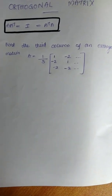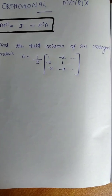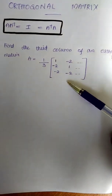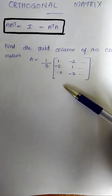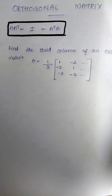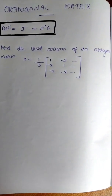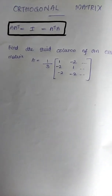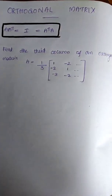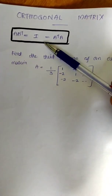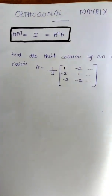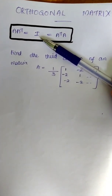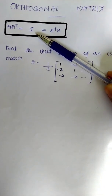Hello, today's topic is orthogonal matrix. This is a question with 9 elements in a 3 by 3 matrix. There are 6 elements, and there are 3 elements in each group. Now, what is an orthogonal matrix? A times A transpose equals the identity matrix. We will multiply this matrix and the answer is the identity matrix. That matrix is called an orthogonal matrix.